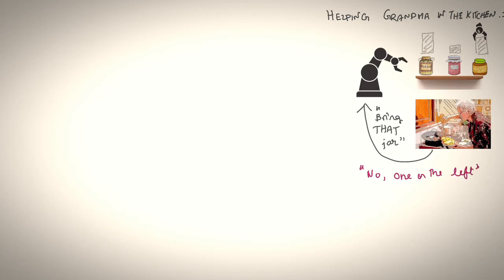It is at this time grandma intervenes by saying no, one on the left. Based on this feedback, the robot is able to infer a posterior over the probabilities over the jars and realize that she's actually talking about the first jar, the pickle jar. And then it updates its motions to go pick that jar and grandma's very happy.